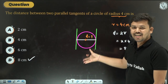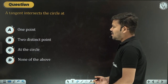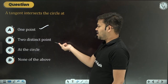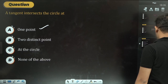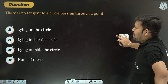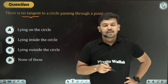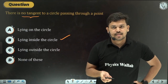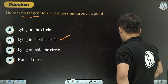Question 3: A tangent intersects a circle at how many points? Answer: one point. A secant intersects at two points. Question 4: There is no tangent to a circle passing through a point — when does this happen? Answer: whenever the point lies inside the circle.